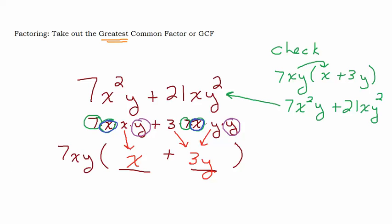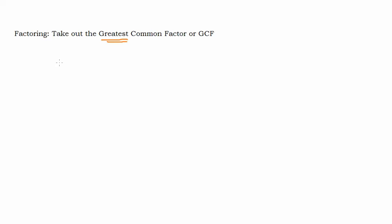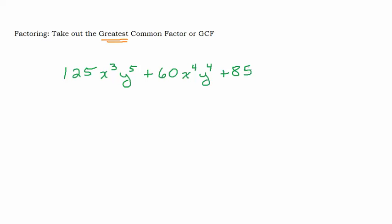Let's try a couple more. Maybe you can pause the video and give it a try. This one's going to be a little more complicated: 125x to the 3rd y to the 5th, plus 60x to the 4th y to the 4th, plus 85x to the 5th y to the 2nd. This one has three terms — we haven't done one with three terms yet — so the common factor you find has to be a common factor of all three terms. Pause the video if you want to give it a try.